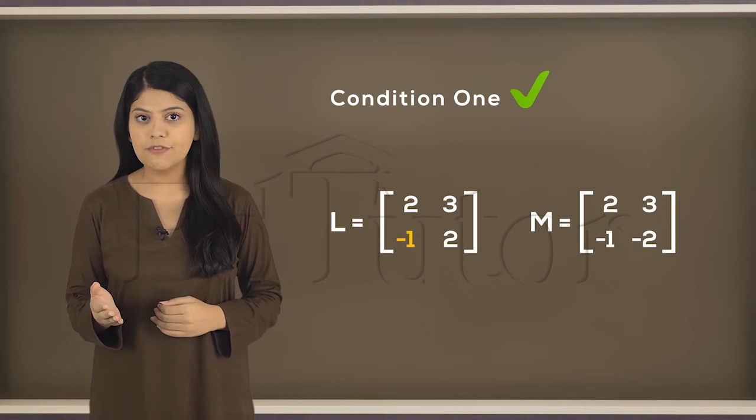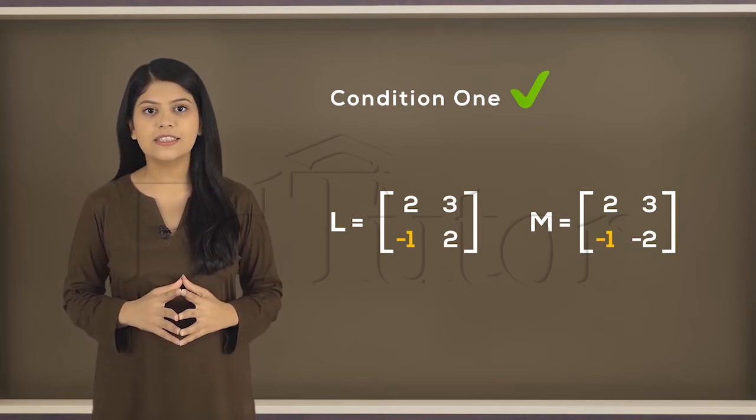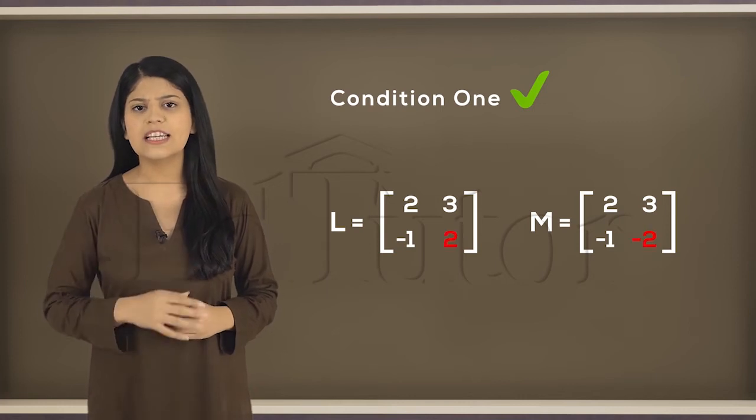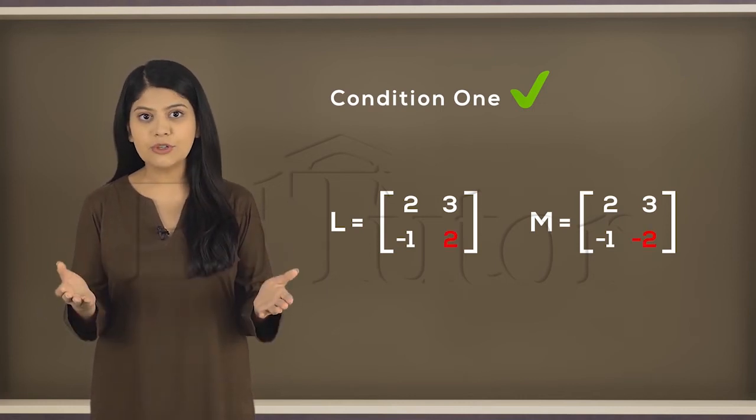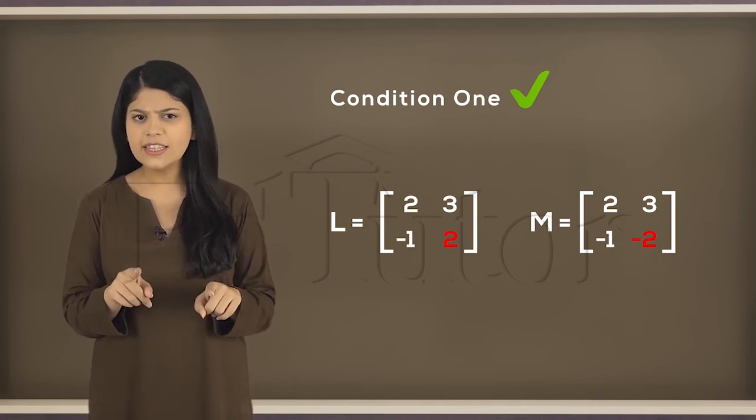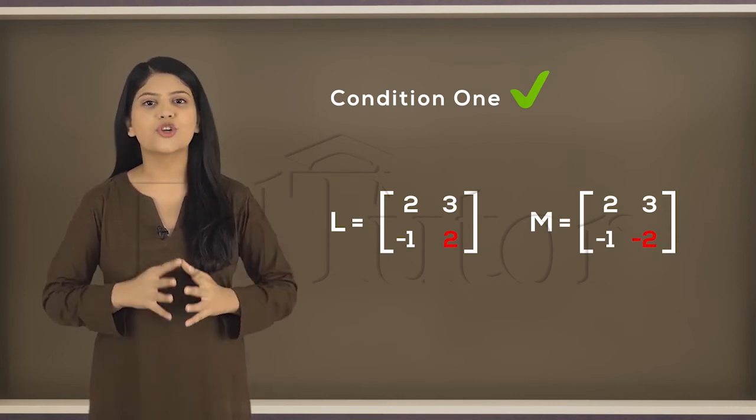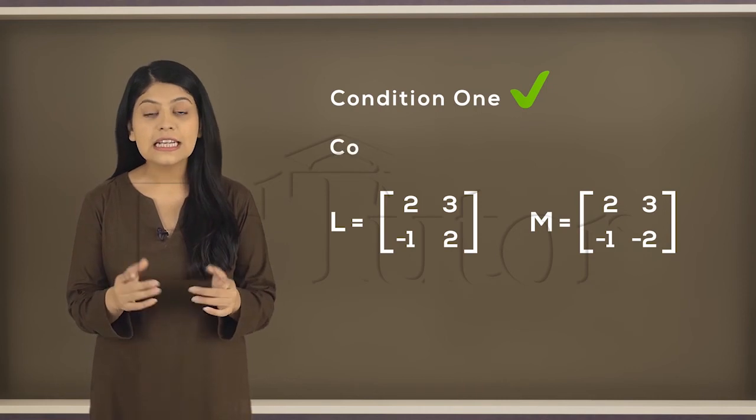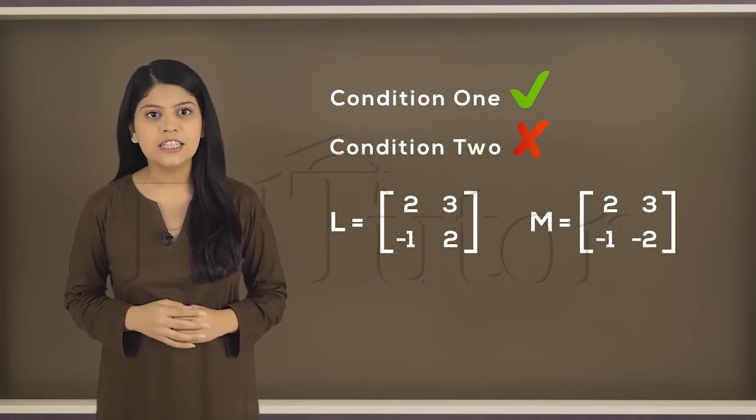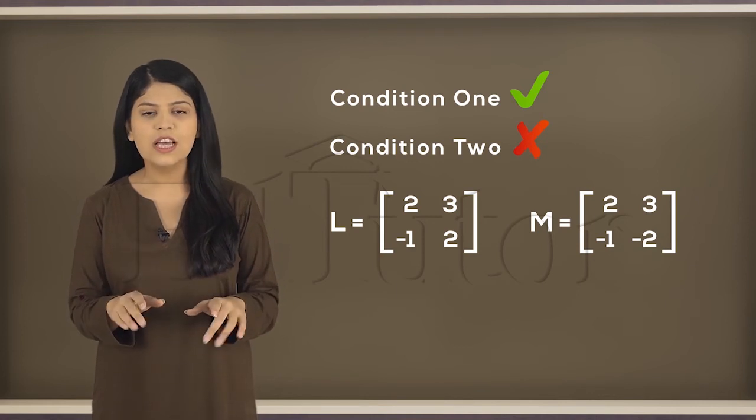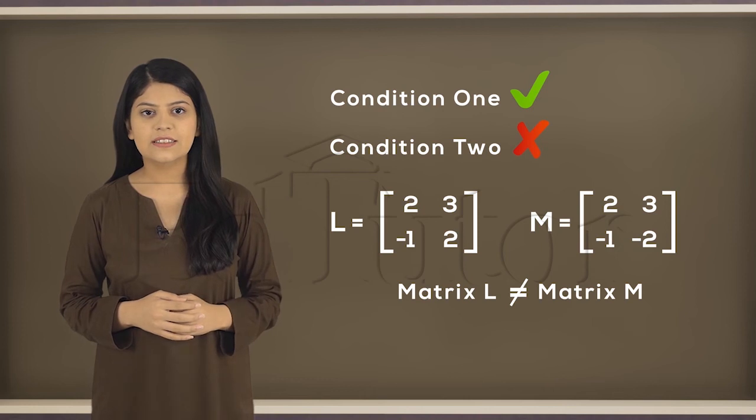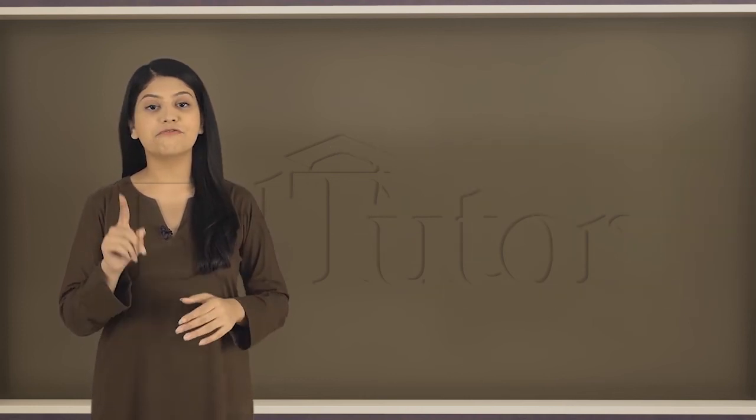But what about this one? The bottom left corners, 2 and negative 2, are they equal? Of course not. Because of this, condition 2 cannot be satisfied, and even if one condition doesn't hold true, we say that the matrices are not equal.